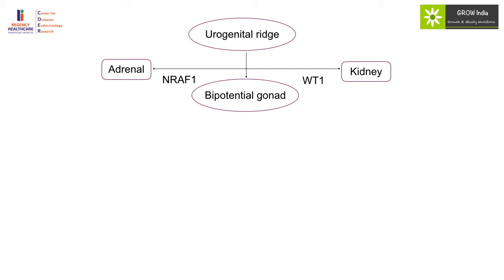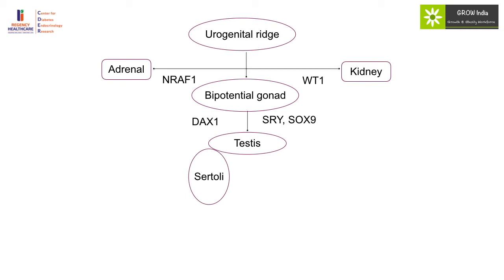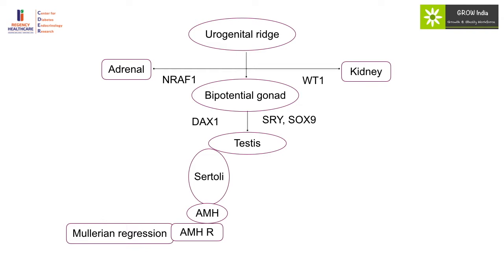Subsequent to the bi-potential gonad, genes involved in testicular development include the SRY region on the Y chromosome and SOX9, which acts as an anti-ovary gene. To counter that, DAX1 — if duplicated — will result in sex reversal. The testis has two components: Sertoli cells, which produce anti-Müllerian hormone responsible for regression of Müllerian structures, and Leydig cells, which largely produce testosterone. Testosterone is activated by 5-alpha reductase to dihydrotestosterone, acting on the androgen receptor, responsible for genital growth.